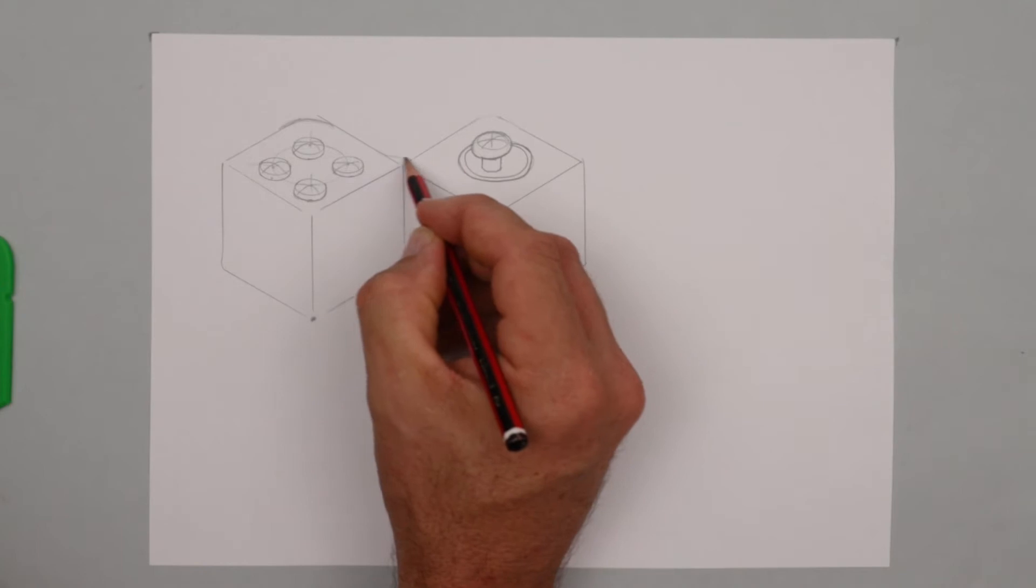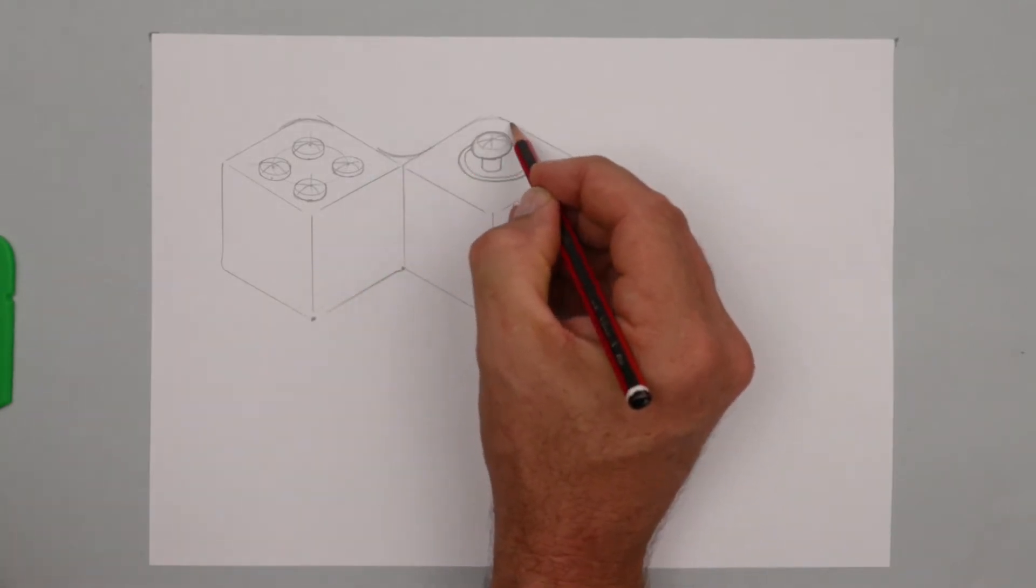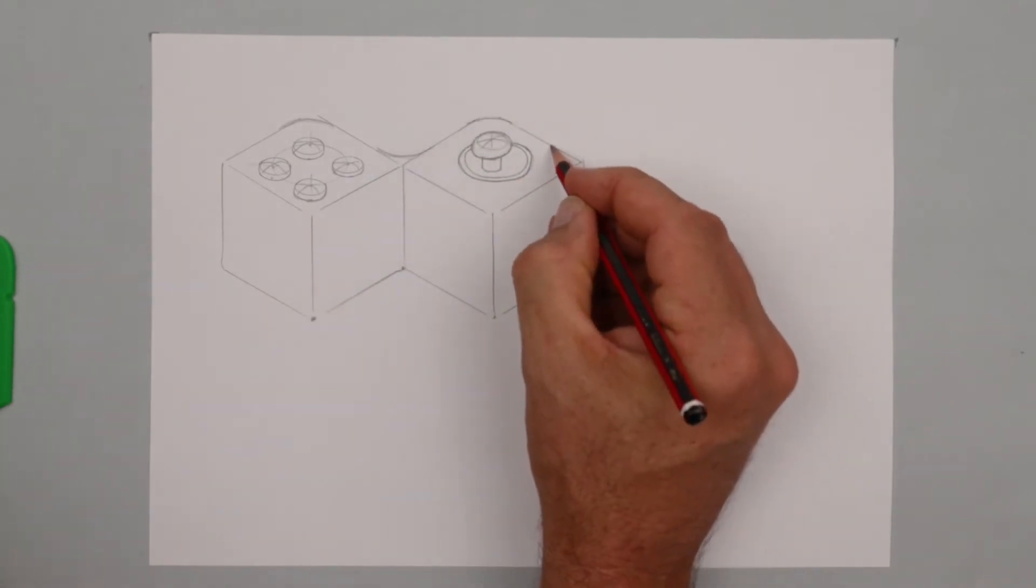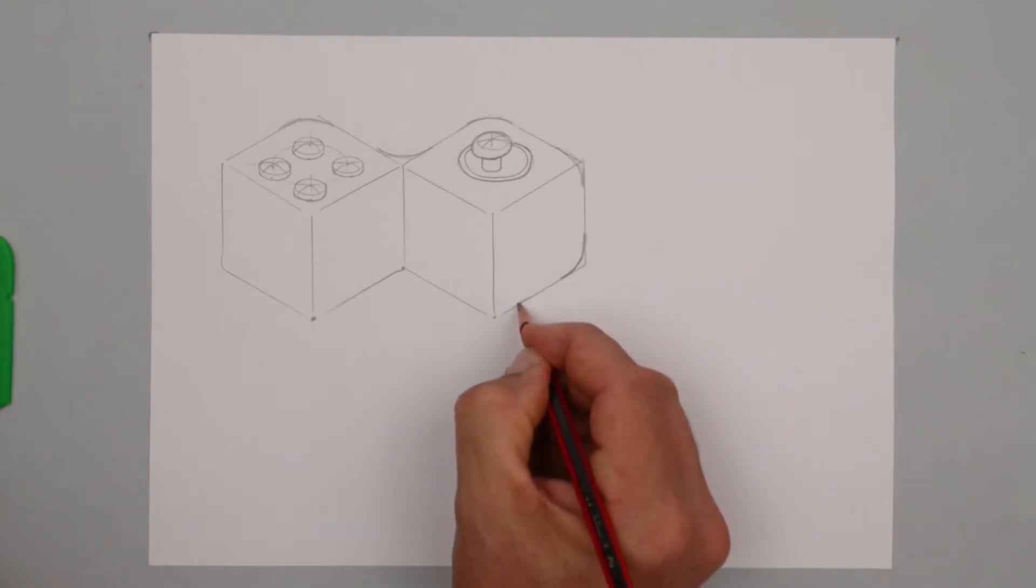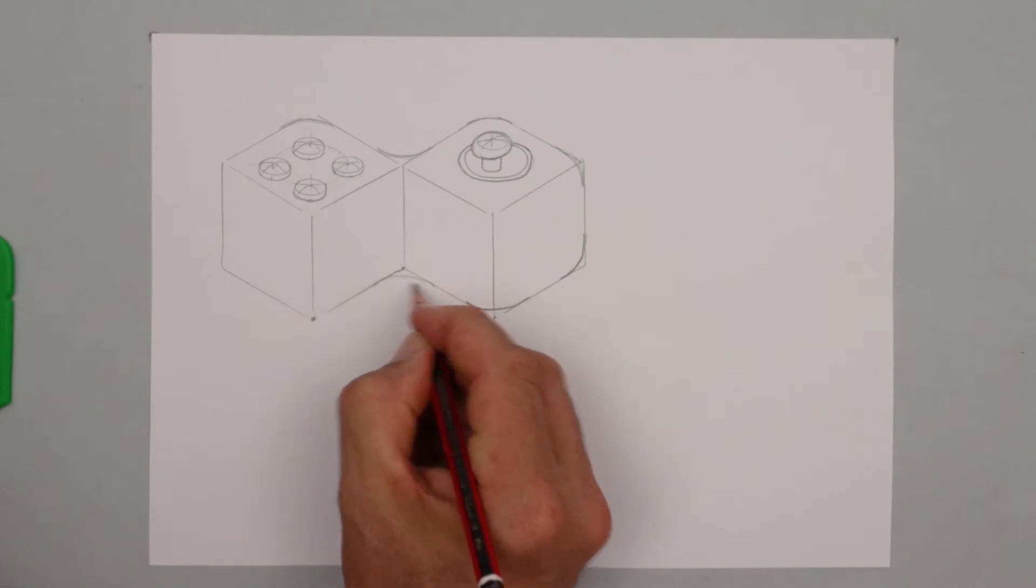I'm rounding off the corners and I'm joining the two cubes with a curve. It's important if you're holding something in your hand that sharp corners don't feel really uncomfortable.